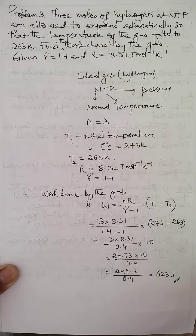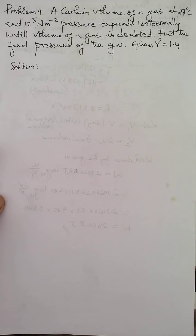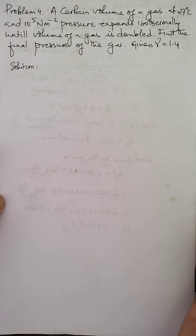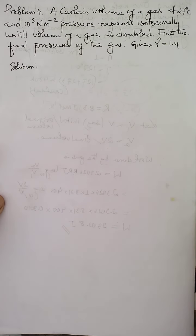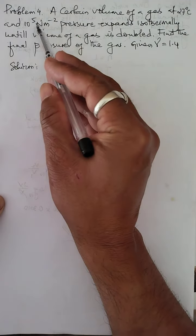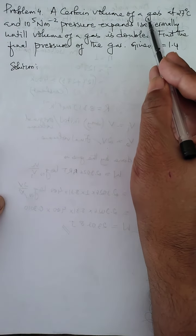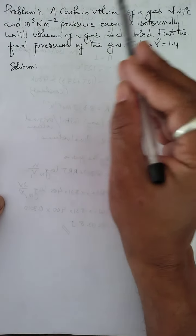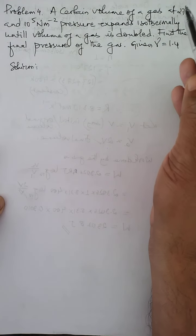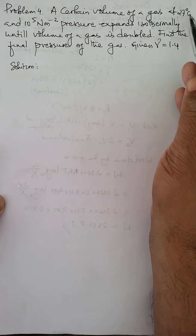This completes problem number three on work done under adiabatic expansion. Now we solve problem number four, which is also very simple and is the last numerical problem from the chapter on isothermal and adiabatic processes. The problem states that a certain volume of gas is at 27 degree Celsius.